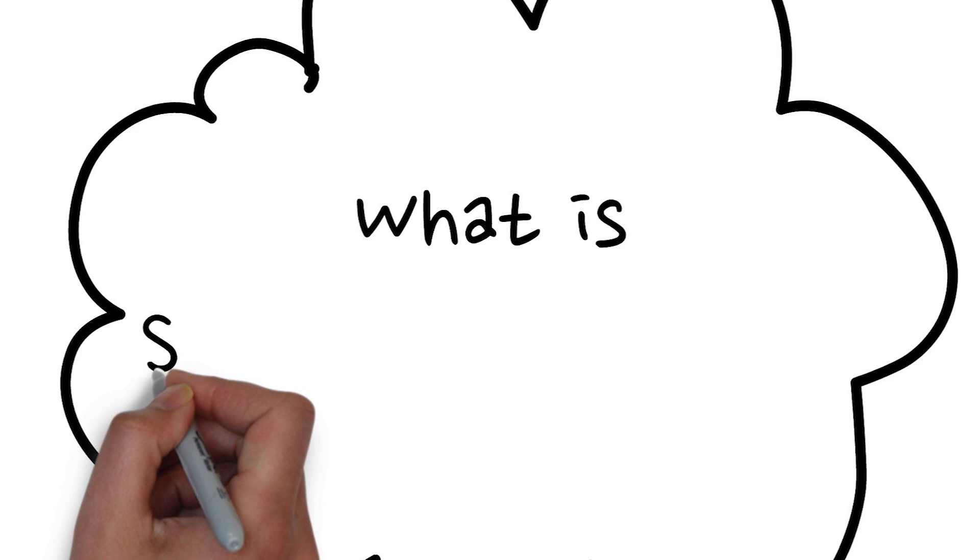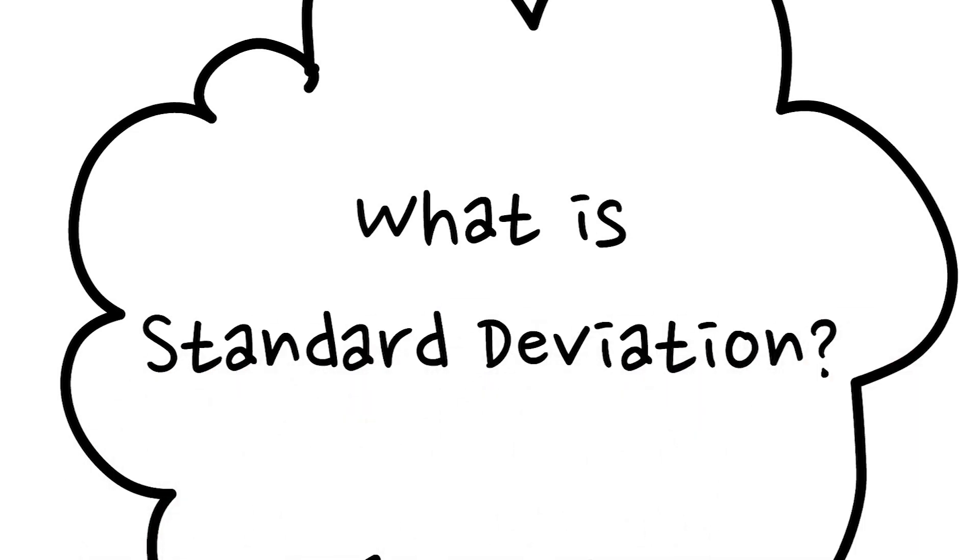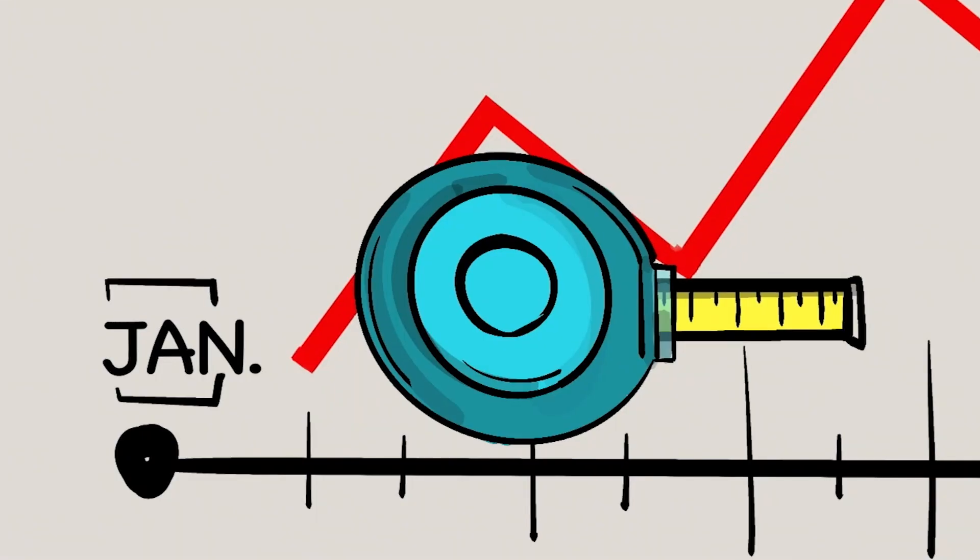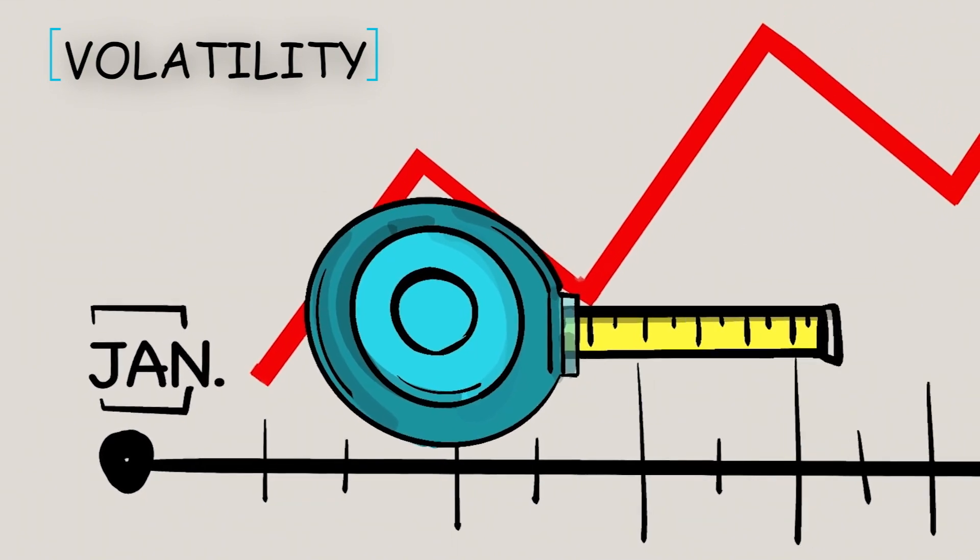Today we'll answer the question, what is standard deviation? In simple terms, standard deviation measures an asset's volatility over a given period,